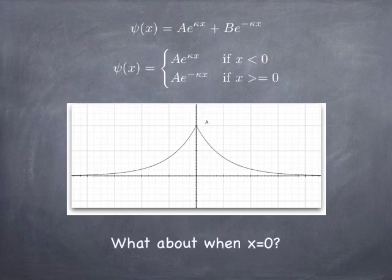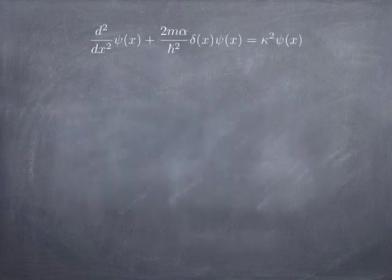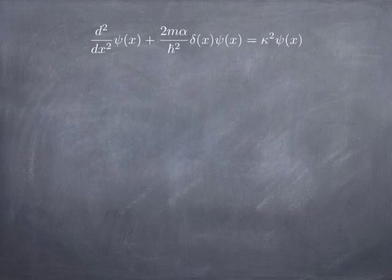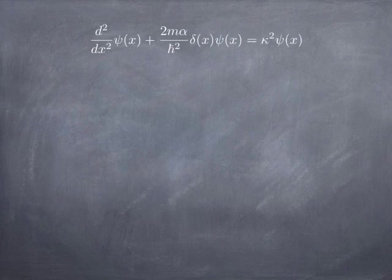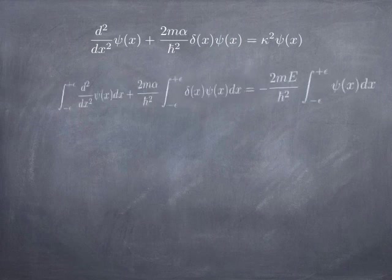Now, what do we do about the origin? To handle the origin, we go back to the Schrödinger equation, and it turns out all delta function problems, all delta function potentials, get handled the same way. You can't deal with the delta function directly. You have to integrate across the delta function, so that the properties we have for the delta function can be invoked. So, if we integrate both sides of the Schrödinger equation from a little bit to the left to a little bit to the right of the origin, we'll go from minus epsilon to plus epsilon.